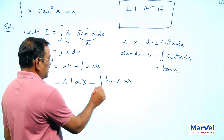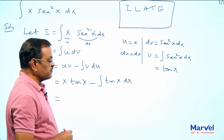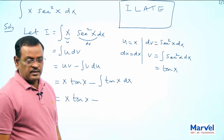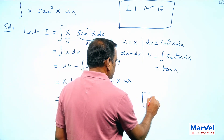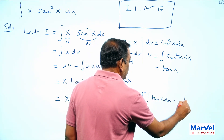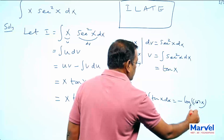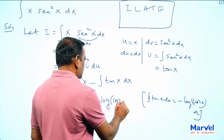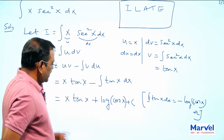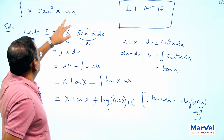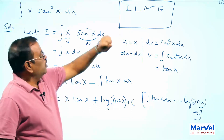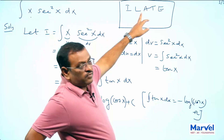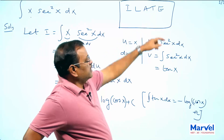Now, from u find du and from dv find v. Substitute in the formula: integral u dv equals u v minus integral v du — which gives x into tan x minus integral tan x dx. The integral of tan x dx is minus log cos x. Again, in the ILATE rule: I for inverse trigonometric, L for logarithmic, A for algebraic, T for trigonometric, E for exponential.